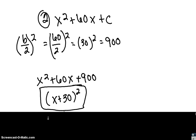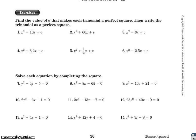Use example number 2 to finish problems 1 through 6 in the first section. The second section asks you to solve each equation by completing the square. Working problem number 9: s squared minus 10s plus 21 equals 0.